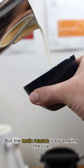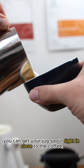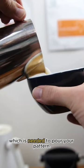But the main reason is by angling the cup, you can get your jug spout right in close to the coffee which is needed to pour your pattern.